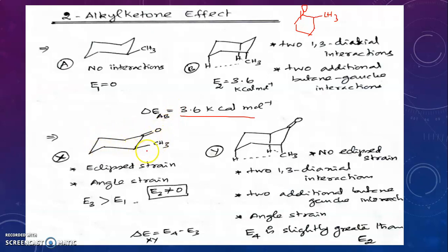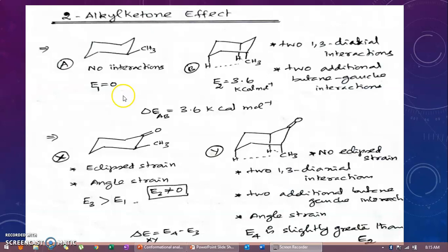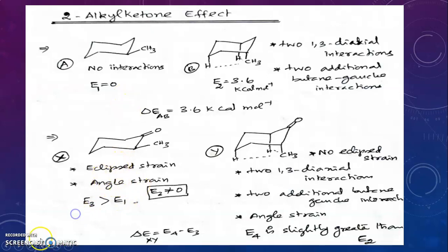In the chair form of cyclohexanone with methyl in equatorial position, we already have angle strain. Additionally, there is eclipse strain between the carbonyl group and the equatorial methyl. Due to angle strain and eclipse strain, the energy E3 of the equatorial methyl cyclohexanone is never zero — it is greater than E1. For the axial methyl cyclohexanone, the eclipse interaction is absent, but 1,3-diaxial interaction and butane-gauche interactions remain along with angle strain, making E4 slightly greater than E2.